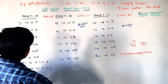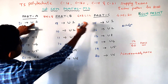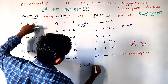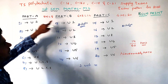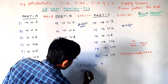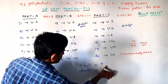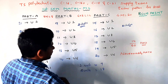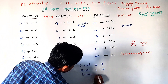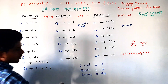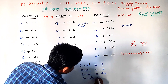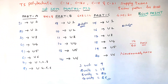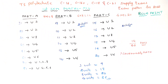Let's understand the marks strategy per unit. Preparing 1 unit gives you approximately 9 marks — that is 1 mark from Part A, 3 marks from Part B, and 5 marks from Part C. Preparing 2 units gives 18 marks. Preparing 3 units gives 27 marks. Preparing 4 units gives 36 marks.